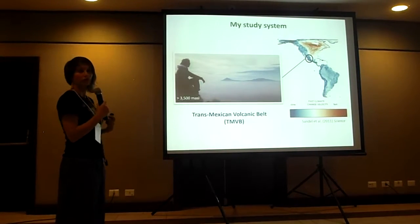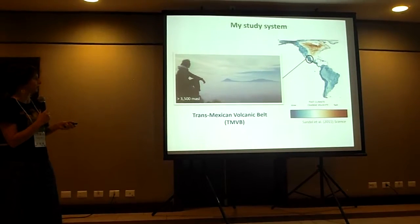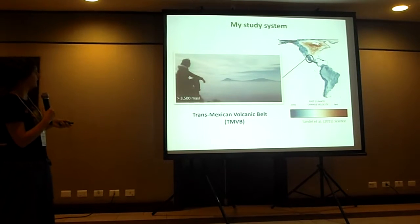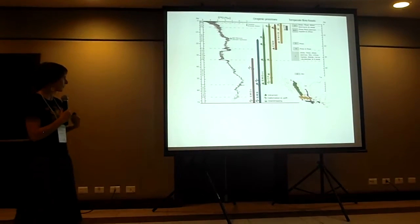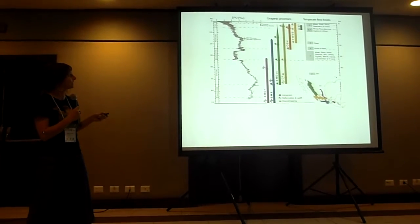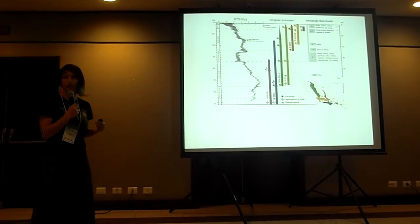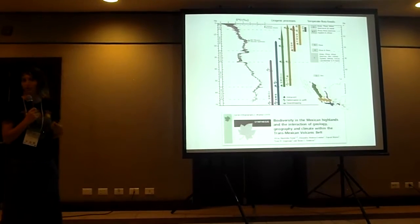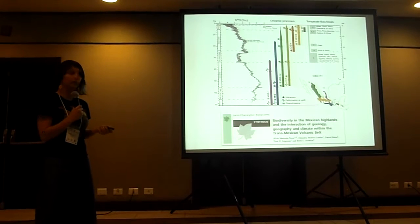Before we get into that, let me introduce my study system, which is the Trans-Mexican Volcanic Belt, located in central Mexico. In particular, I focus on large stratovolcanoes — like Popocatépetl and Ixtaccíhuatl — that are higher than 3,500 meters above sea level. The Trans-Mexican Volcanic Belt crosses Mexico transversally and has a volcanic origin that is relatively recent compared to the rest of the Mexican highlands. The large stratovolcanoes I'm working with emerged during the last one million years. We just published a paper reviewing the climatic, geological, and biogeographical history for this region.